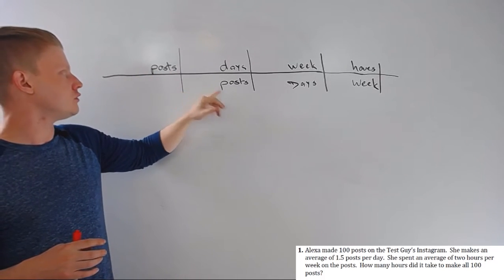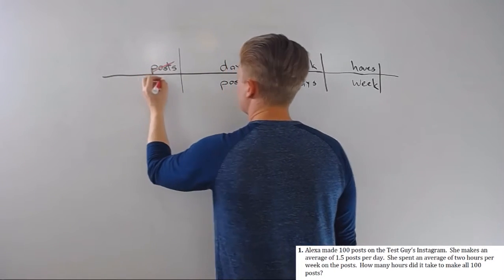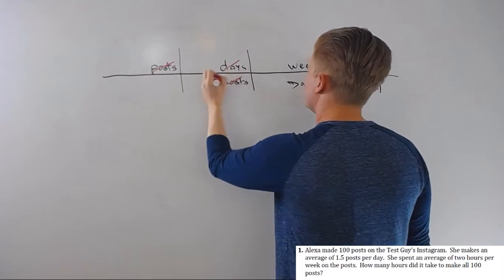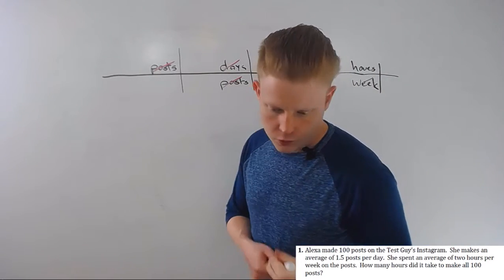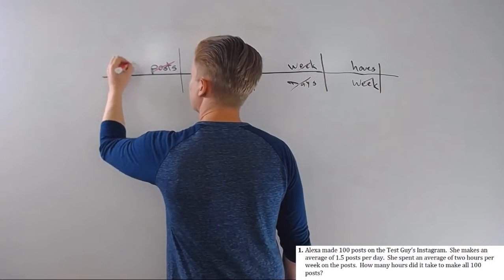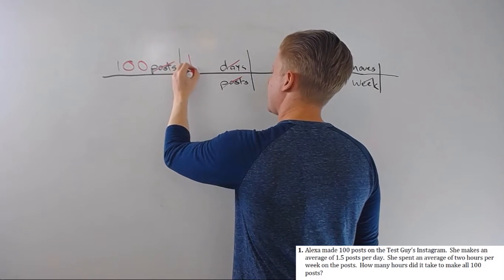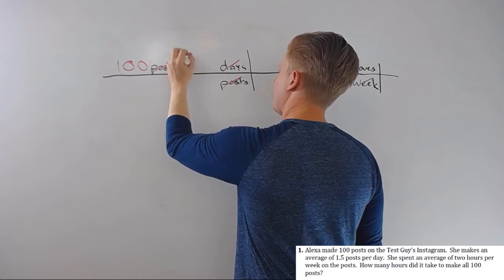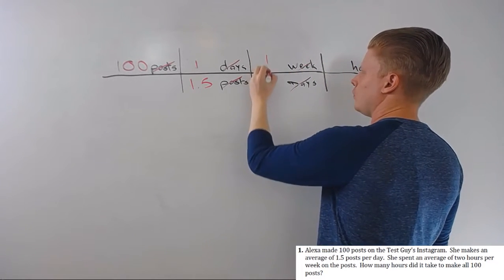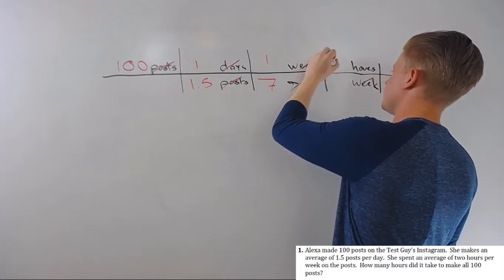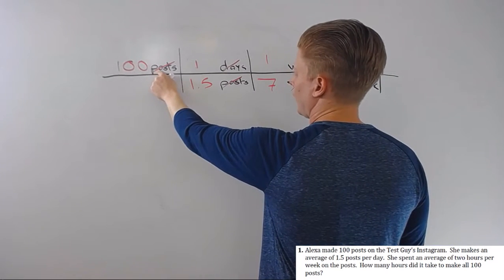The days unit will go away, the weeks unit will go away. So let's go ahead and fill in the numbers. We have a hundred posts. We have an average of 1.5 posts per day—that's one day on top, 1.5 on the bottom. One week is seven days, and she spends an average of two hours for one week. So multiply straight across: one hundred times one times one times two is two hundred.